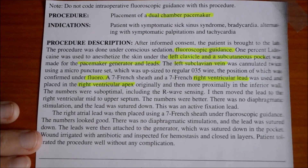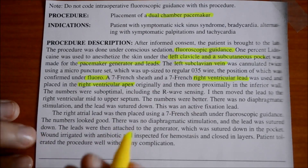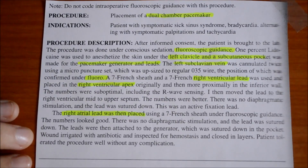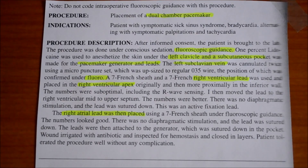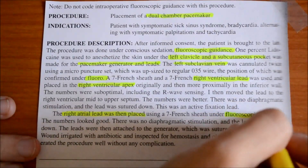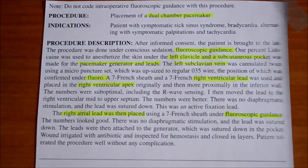The numbers were better, there was no diaphragmatic stimulation, and the lead was sutured down. This was an active fixation lead. The right atrial lead was then placed — this is where the second lead was placed, so we know it's going to the right atrium. Right atrium is defined in PCS as a separate body part character, meaning there will be two separate codes: one for the right ventricle and one for the right atrium. Using a 7 French sheath under fluoroscopic guidance — we need to remember fluoroscopic guidance — so they use fluoro for both inserting and attaching the right ventricle and the right atrium lead.